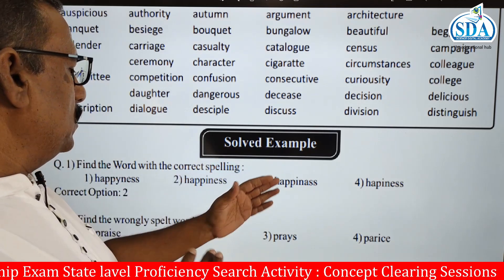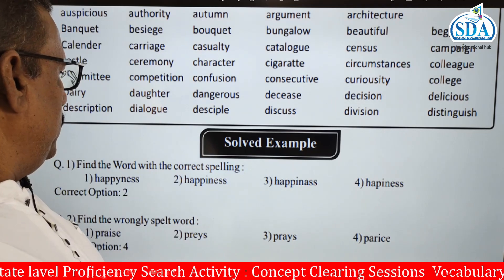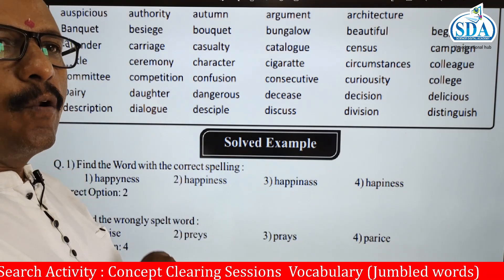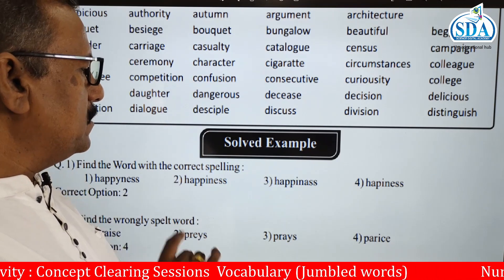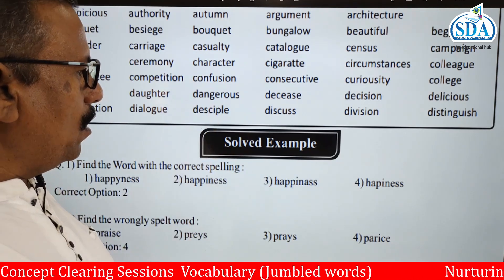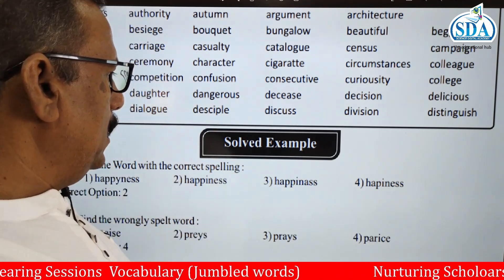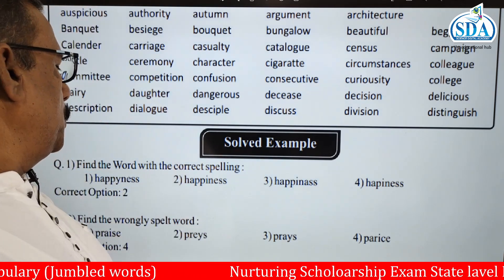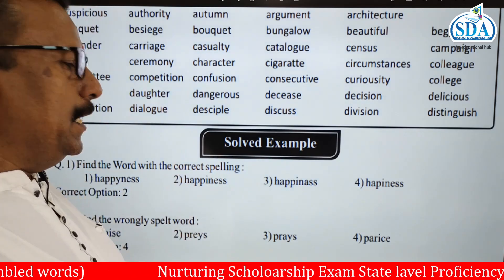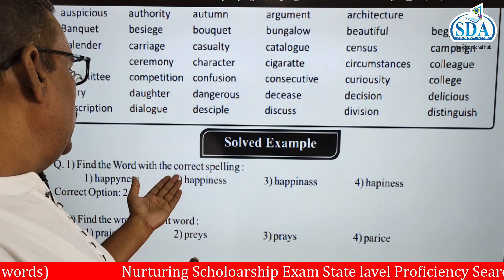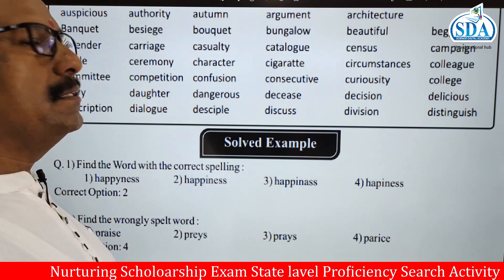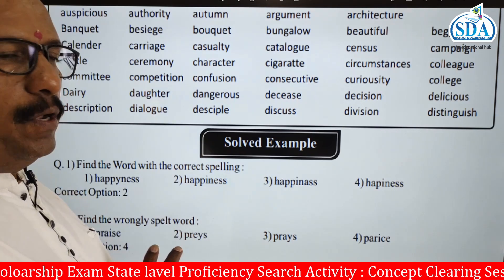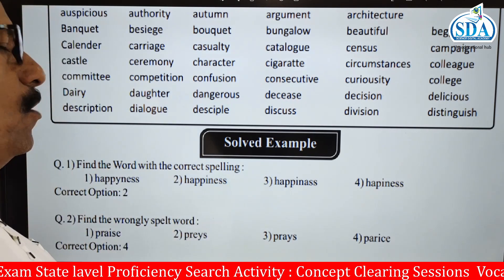That third option, happiness with N-A, that A is a wrong spelling — so it is also wrong. The fourth option has a single P, which is wrong. Option number two, happiness — H-A-double P-I-N-E-S-S — that is the correctly spelled word.